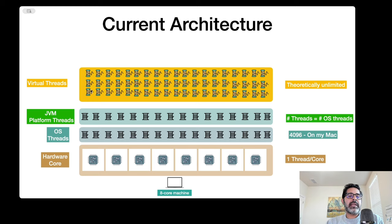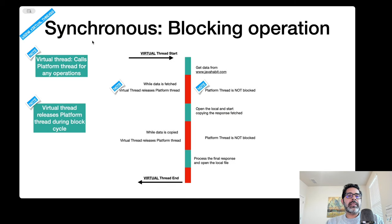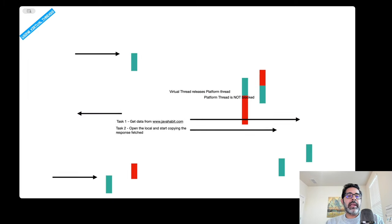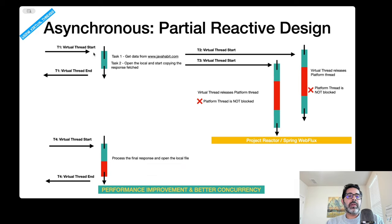As soon as the job unblocks, the virtual thread picks up any available platform thread from the pool to finish the job. Once finished, that platform thread is also released. Compared to synchronous blocking - you don't have to change your coding drastically, just introduce virtual threads. Virtual threads release the platform thread whenever blocked, so when downloading data from a website, the platform thread isn't blocked - only the virtual thread waits.